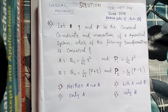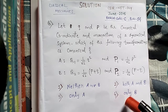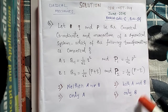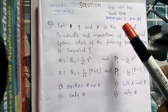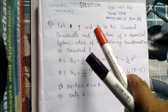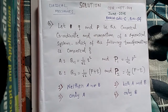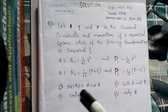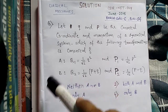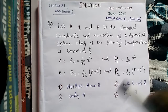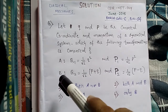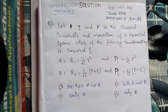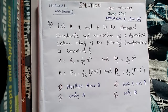Hello friends, this is Vidhan. Welcome to my channel. This is a problem of classical mechanics based on canonical transformation. It is from June 2015, booklet code C, question number 54. Let small q and small p be the canonical coordinate and momentum of a dynamical system. Which of the transformations — transformation A or transformation B — is canonical?